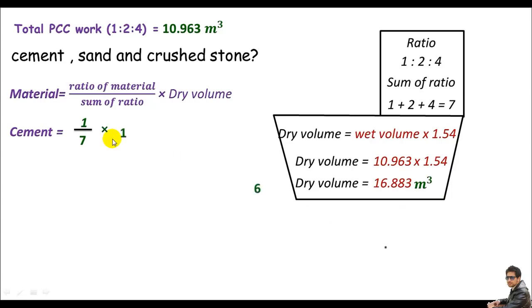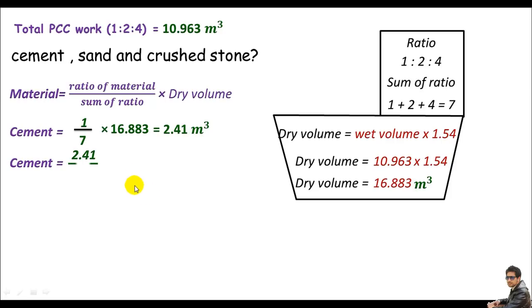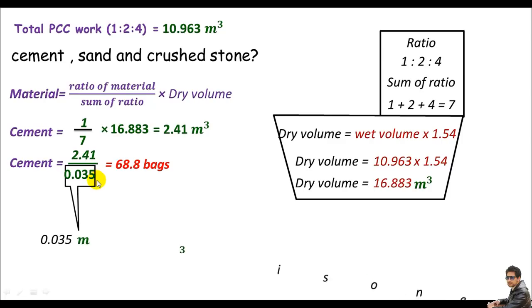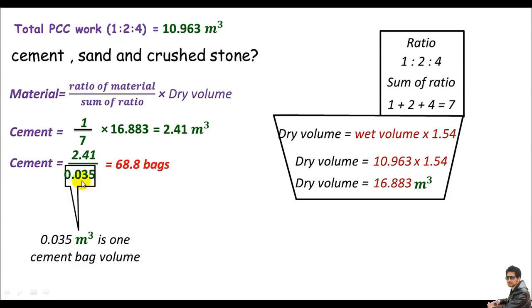Converting cement volume to bags: 2.41 / 0.035 = 68.8 bags. Note: 0.035 cubic meters is the volume of one cement bag in Pakistan. If your country uses a different bag volume, substitute accordingly in this equation.